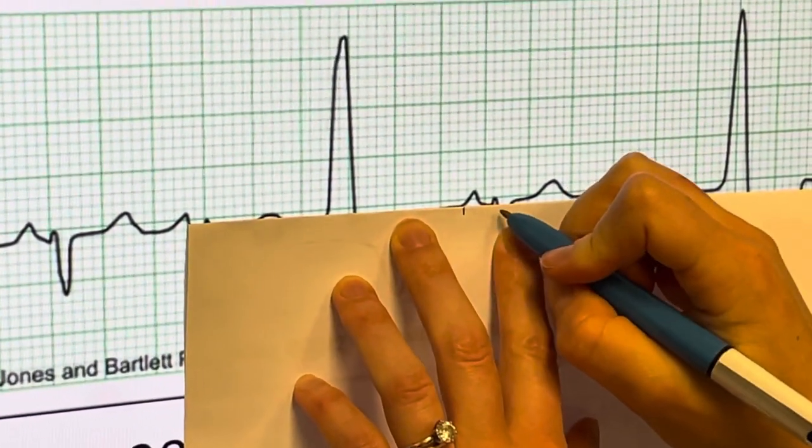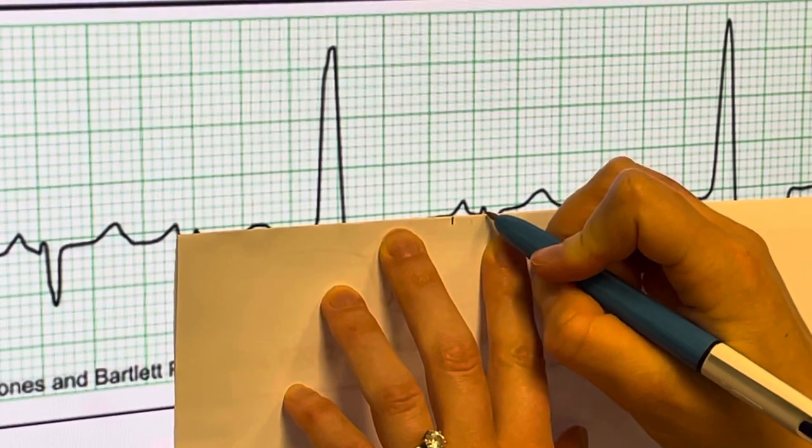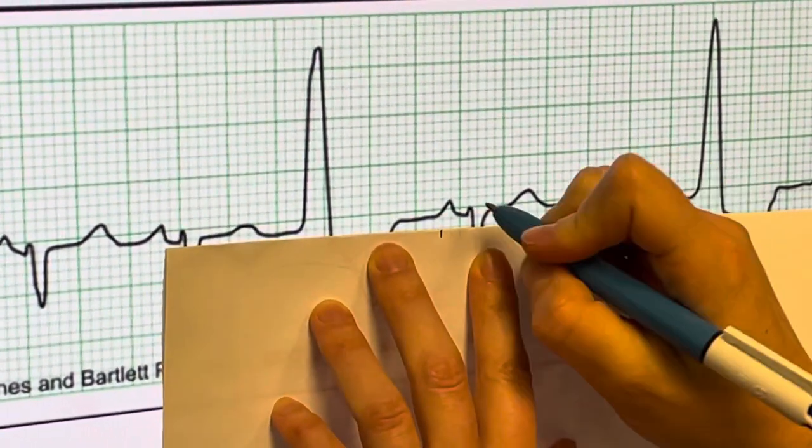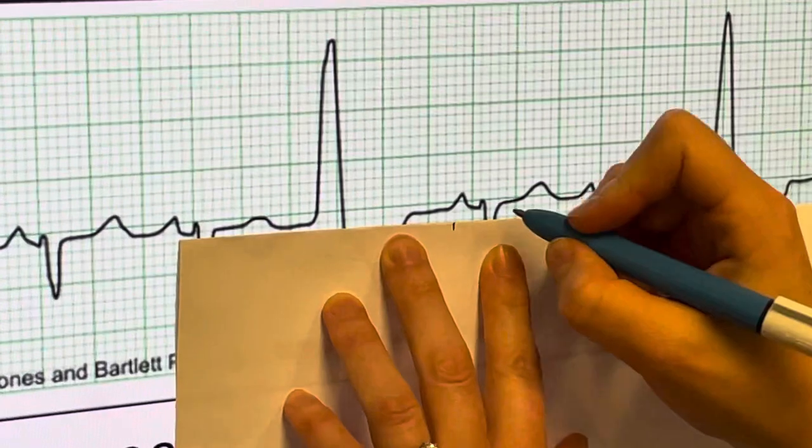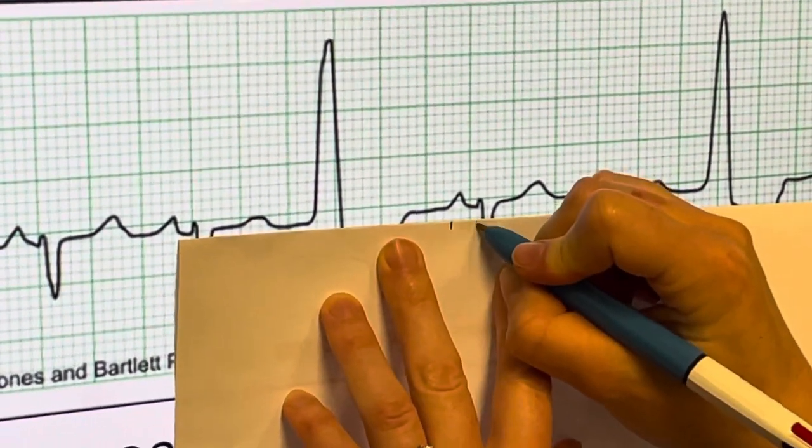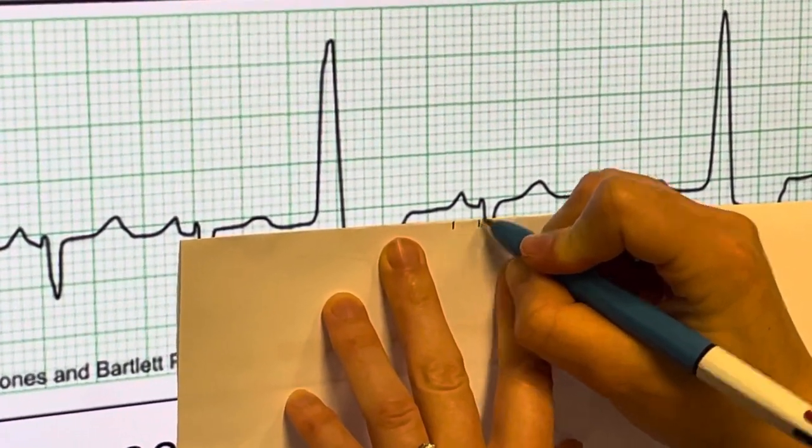I'm going to end my PR interval when the baseline comes up into the QRS complex. Right here, I can see I'm coming up into the QRS complex. I'll draw a line down there to symbolize the end of the PR interval.